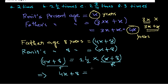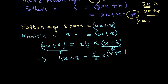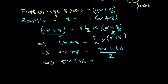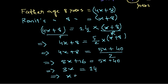Setting up the equation: 4x + 8 = (5/2)(x + 8). Multiplying both sides by 2: 8x + 16 = 5x + 40. Bringing 5x to the left: 3x = 40 - 16 = 24. Therefore x = 24 / 3 = 8. The value of x is 8, meaning Ronit's present age is 8 years.